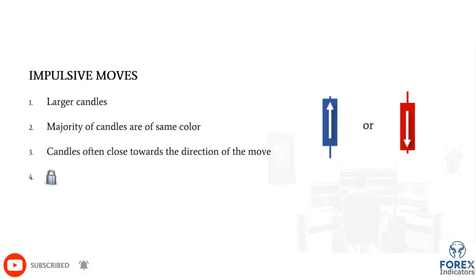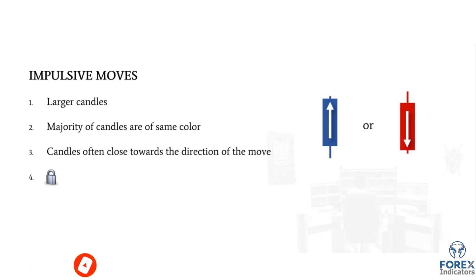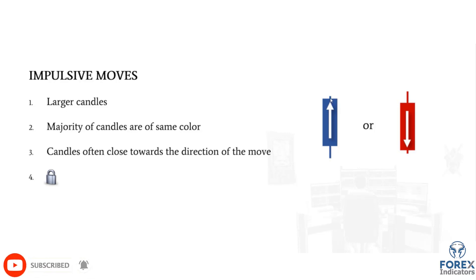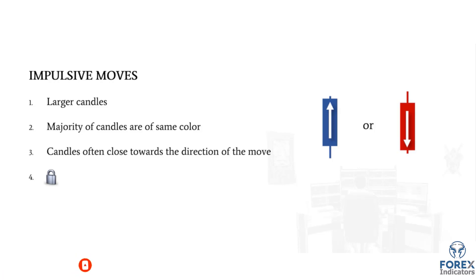The third characteristic is that the closes of the candles tend to be towards the direction of the move — towards the top for bullish, towards the bottom for bearish. On a daily candle, closing near the highs tells you the market didn't push back significantly from the day's highs. The buying pressure really didn't let up going into the close, which further confirms strong directional order flow.